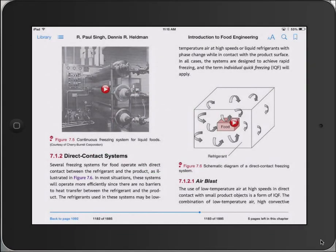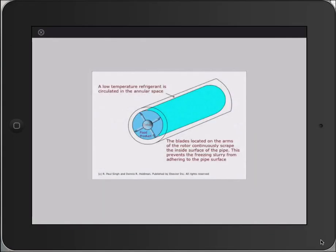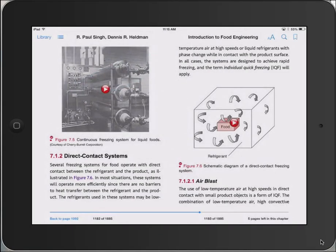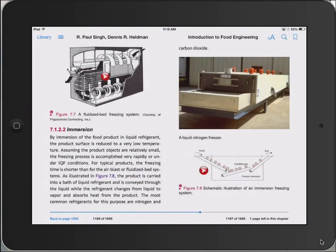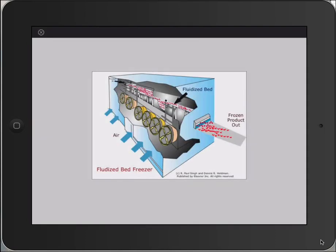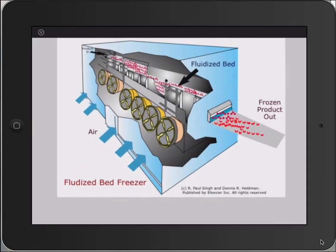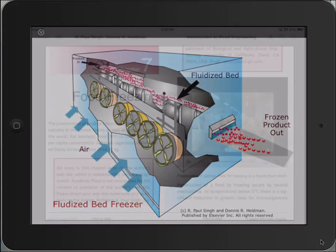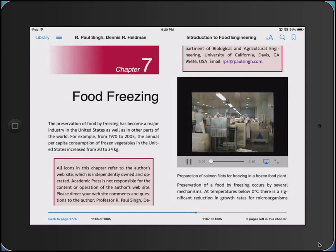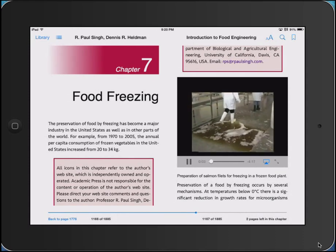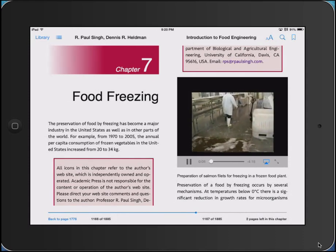Some of the photographs are linked to animations. Here are the workings of a scraped surface freezer. There are video clips of industrial equipment. Animations help enhance the information that one can get from an illustration. Here we view how foods are frozen in a fluidized bed freezer. There are also video clips of industrial processes, including a movie of how salmon fillets are prepared in a fish freezing plant in South America.